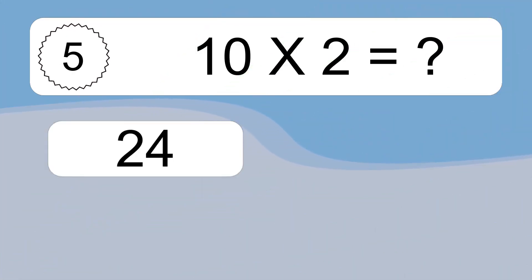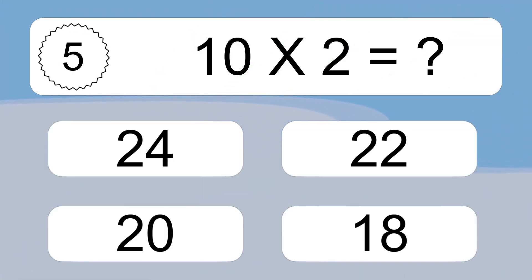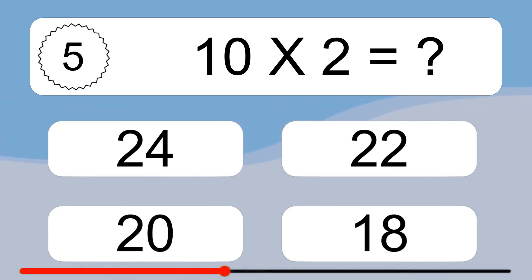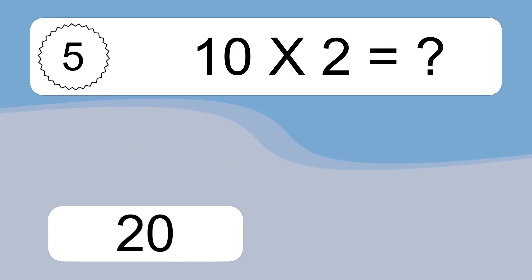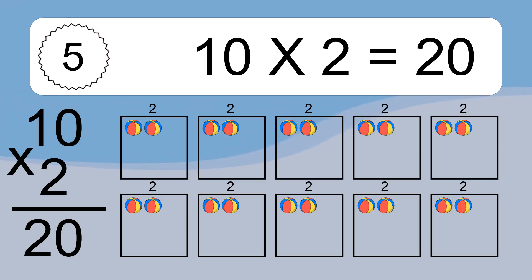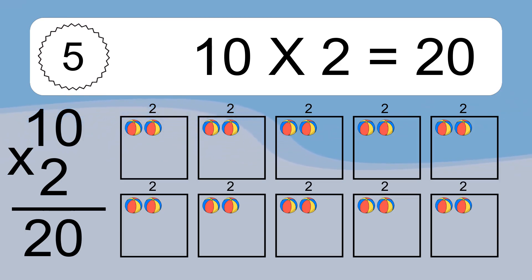10 times 2 equals what? 10 times 2 equals 20. We have 10 boxes and each box has 2 colorful balls inside. If you count all the balls in all the boxes together, you will have 10 times 2 balls. This equals 20 balls.